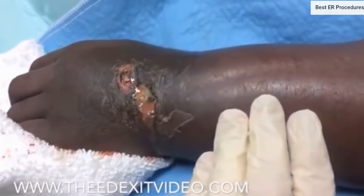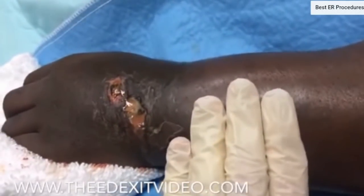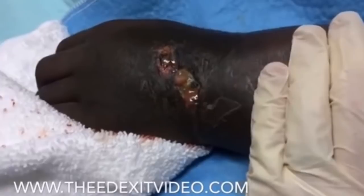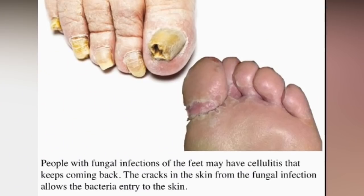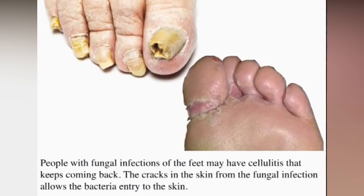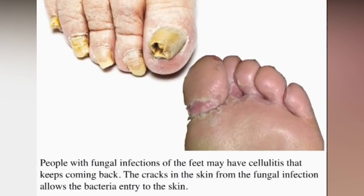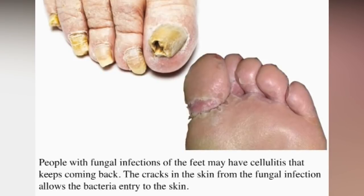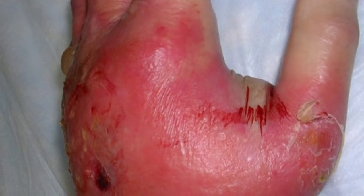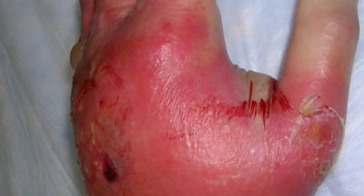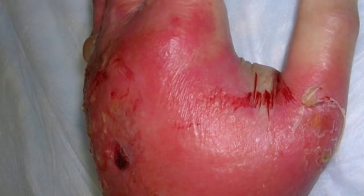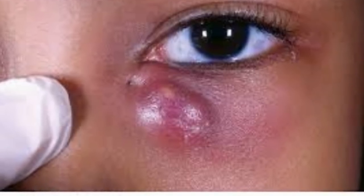Risk factors for cellulitis include the following: cracks or peeling skin between the toes, history of peripheral vascular disease, history of trauma or injury with a break in the skin like skin wounds, insect bites and stings, animal bites and human bites, ulcers from certain diseases including diabetes and vascular disease, and use of corticosteroid medications or medications that suppress the immune system.